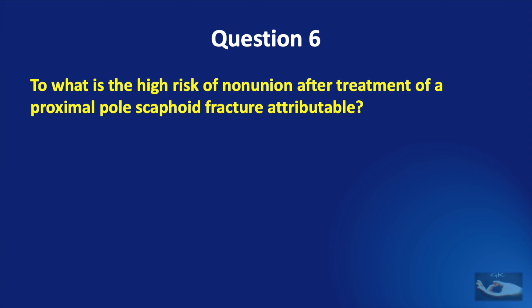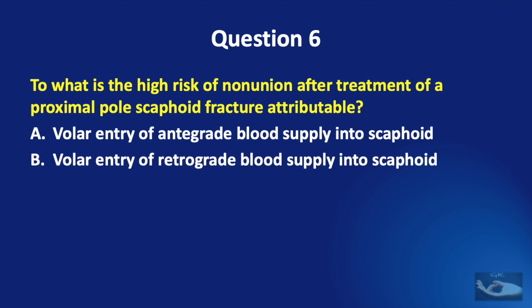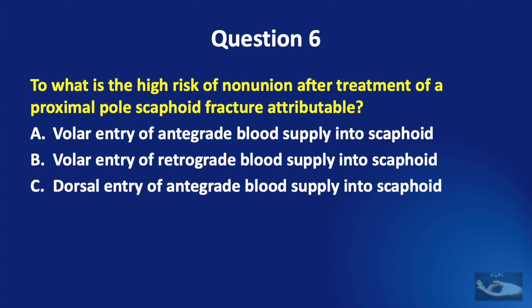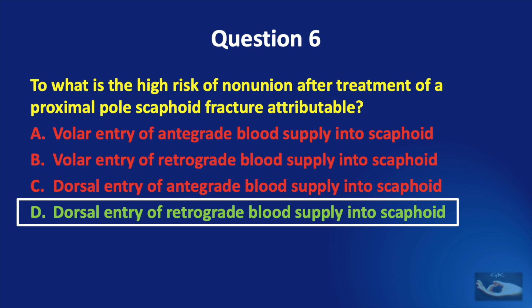Question number 6. To what is the high risk of nonunion after treatment of a proximal pole scaphoid fracture attributable? Volar entry of antegrade blood supply, volar entry of retrograde blood supply, dorsal entry of antegrade blood supply, or dorsal entry of retrograde blood supply into the scaphoid. The correct answer is dorsal entry of retrograde blood supply into the scaphoid.